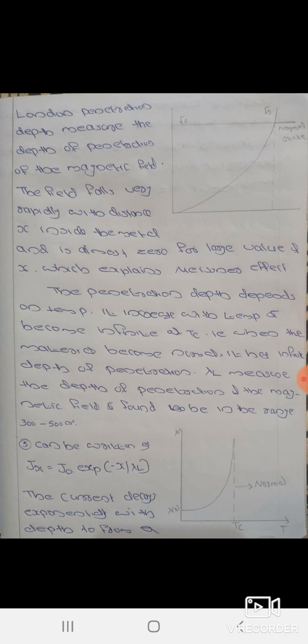The penetration depth depends on temperature. It increases with temperature and becomes infinite at the critical temperature Tc. At the critical temperature, the superconductor becomes normal and has infinite depth of penetration. λ_L measures the depth of penetration of the magnetic field, found to be in the ranging values.